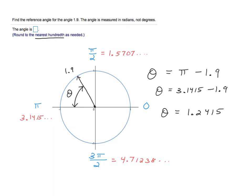And it's asking me to round to the nearest hundredth. So that's rounding out to 1.24. In fact, that's going to be my answer. The reference angle is 1.24 if we round to the hundredths place.